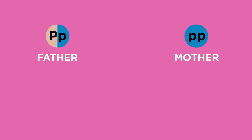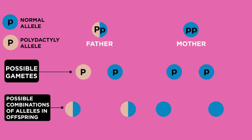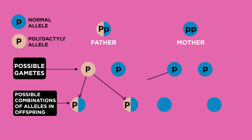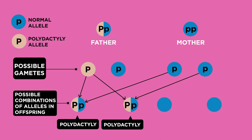In an example, the father has a copy of this allele but the mother does not. We can show this using a genetic diagram. Offspring with one dominant allele big P and one recessive allele little p will also have the condition, whereas these offspring won't have the condition. Can you see what their genotype must be?